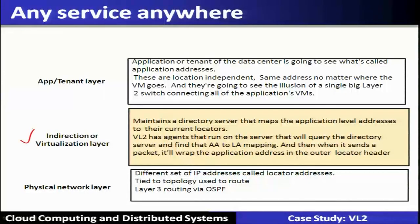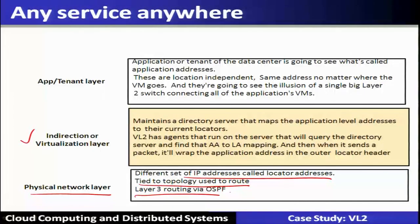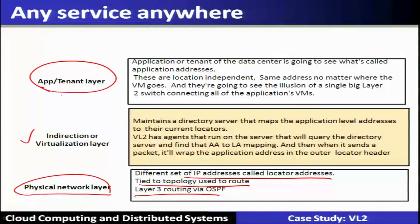This aspect is supported by the virtualization layer. There are three different layers: a physical layer with IP addresses — also called locator addresses — tied to the topology and following OSPF routing; and an application or tenant layer where the tenant sees application addresses. The tenants communicate through application addresses, which are quite different from IP addresses and are location independent. VMs see the illusion of a single big layer-2 switch connecting all application VMs.